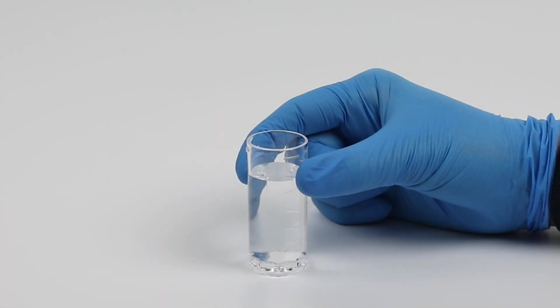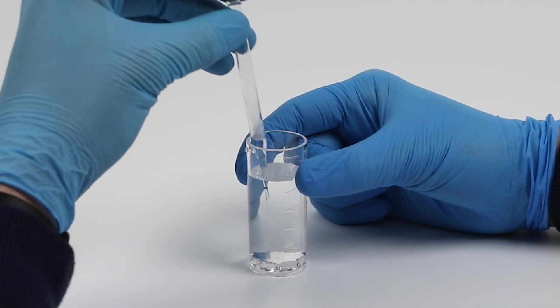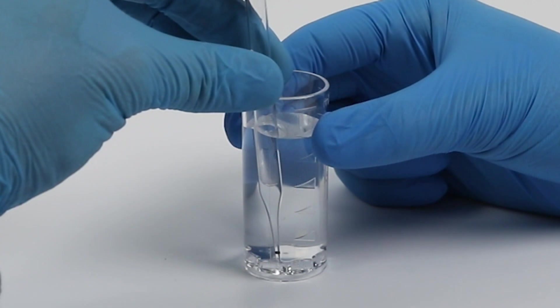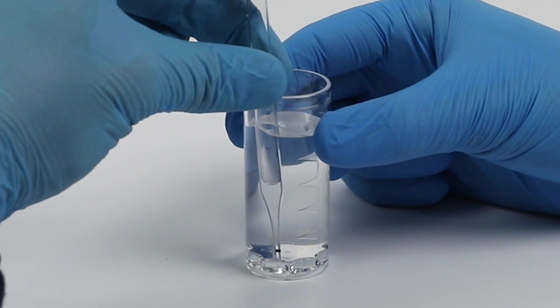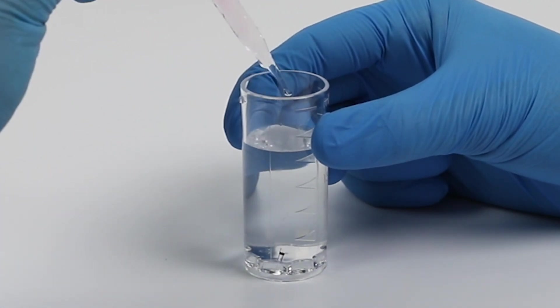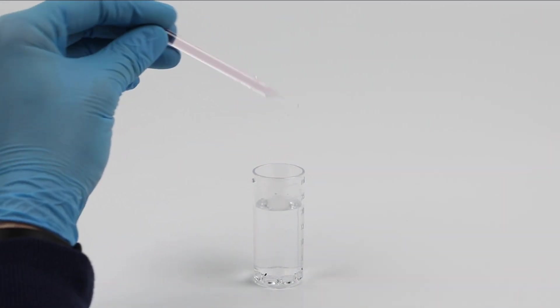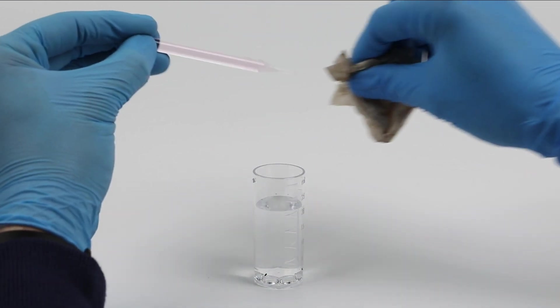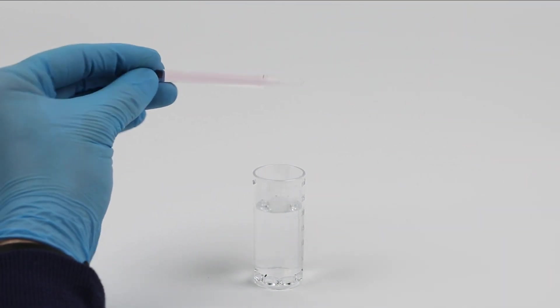Now that the sample is prepared, place the ampule into the sample cup. The tip should fit into one of the pockets in the bottom of the cup. Snap the tip by pulling the ampule towards you. Wipe the ampule off and invert it several times to allow the bubble to mix the contents.